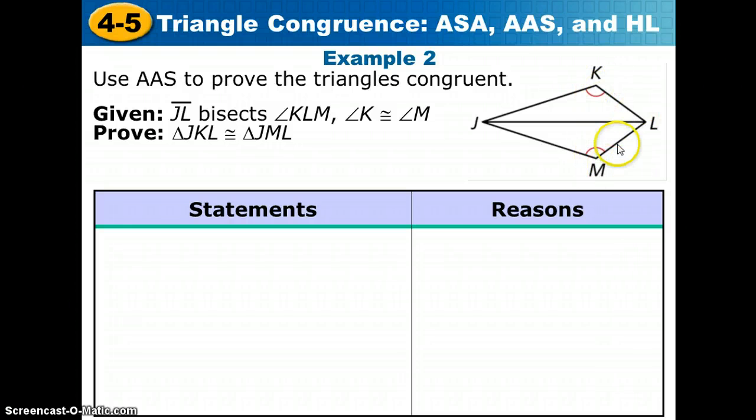We also are given angle K and angle M are congruent. So we have two pairs of congruent angles and then they share side JL. So JL is congruent to itself by the reflexive property. So we could show angle-angle-side congruence. So that's what we are going to do. We are going to start with our first given. Segment JL bisects angle KLM. That's given to us.